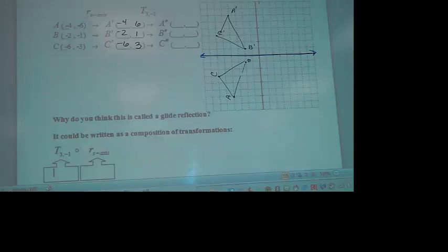And I think those are the right points that I just plotted just by looking at it. Negative 2, 1. Negative 4, 6. Negative 6, 3.